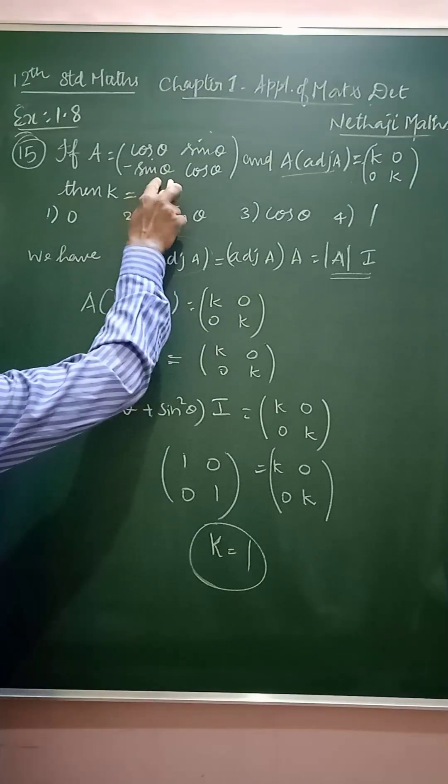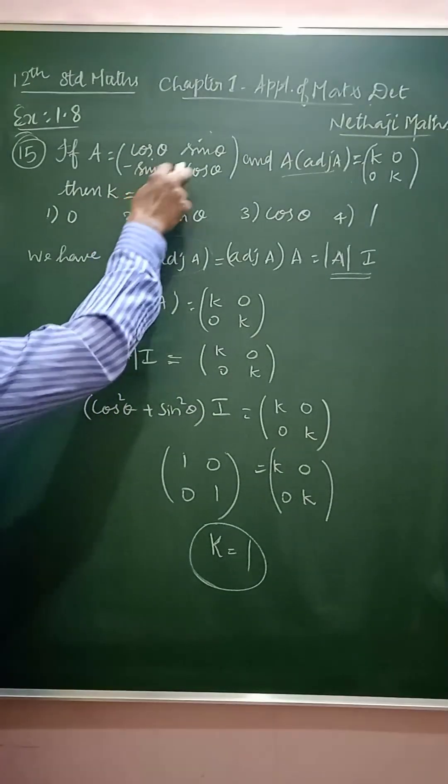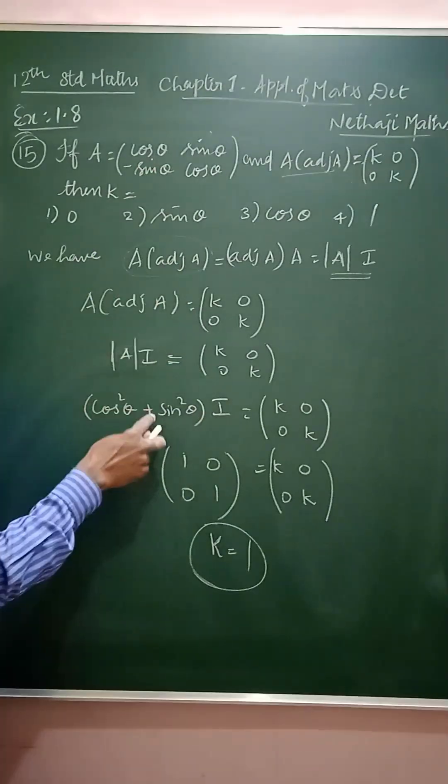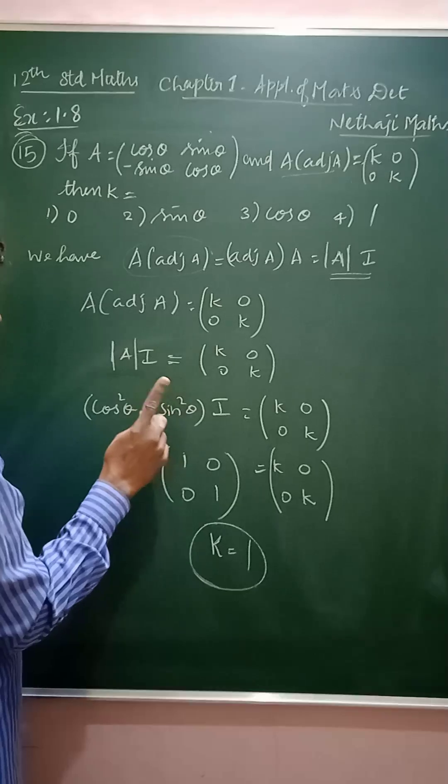So, what is the determinant value of this matrix? Cos into cos, cos square minus sin square, one more minus, you add one, plus cos, sorry, plus sin square, no, no, cos square plus sin square becomes 1.